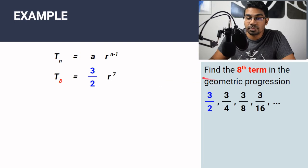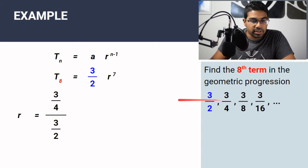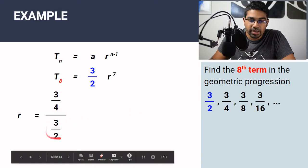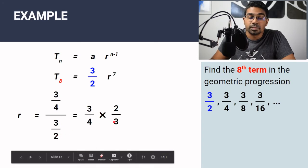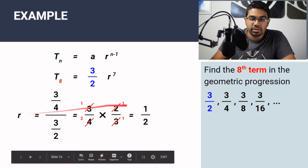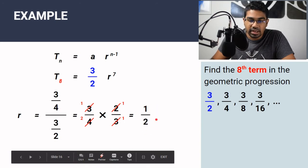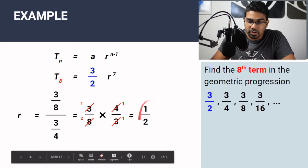To find R, we take any number in the sequence and divide by the preceding number. Taking the first two terms: R = (3/4) ÷ (3/2). Dividing by a fraction means multiplying by its reciprocal, so this becomes (3/4) × (2/3). Simplifying gives R = 1/2. We get the same common ratio of 1/2 no matter which pair we use.